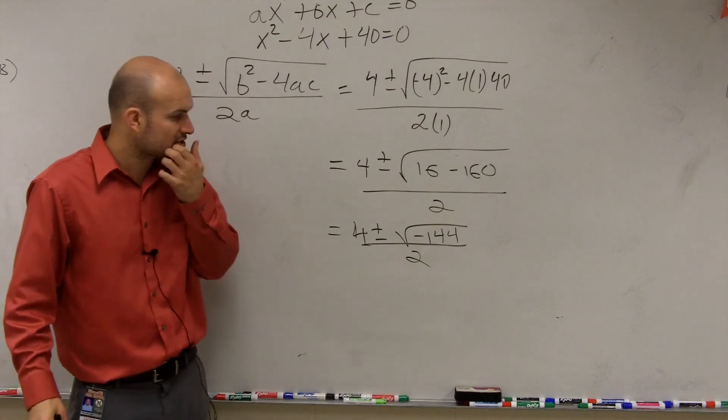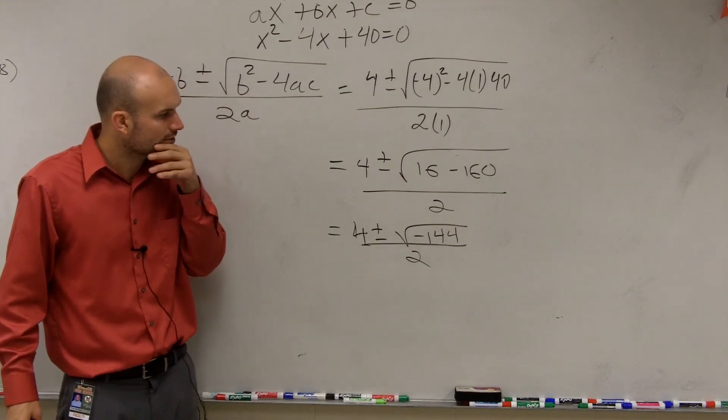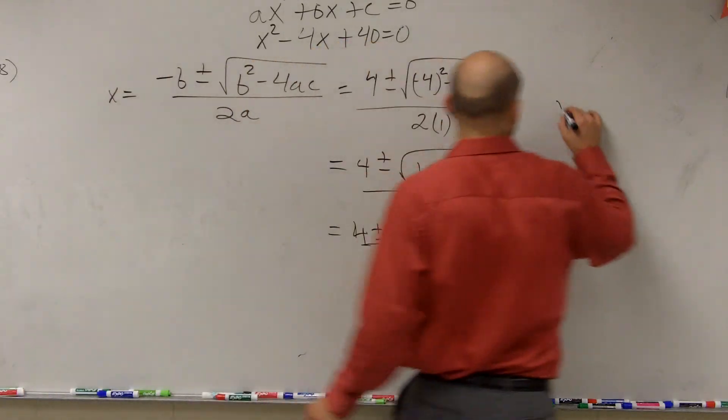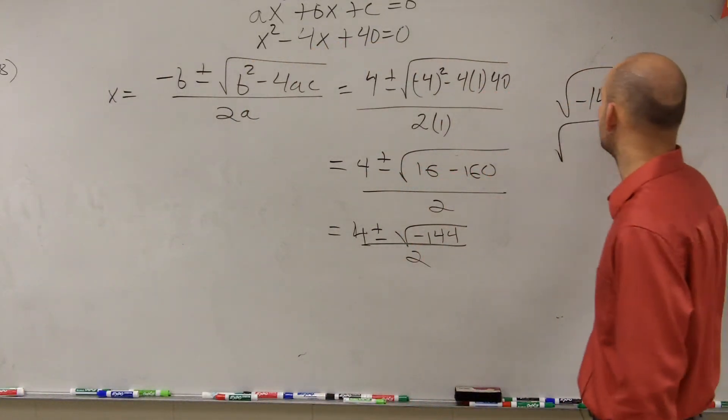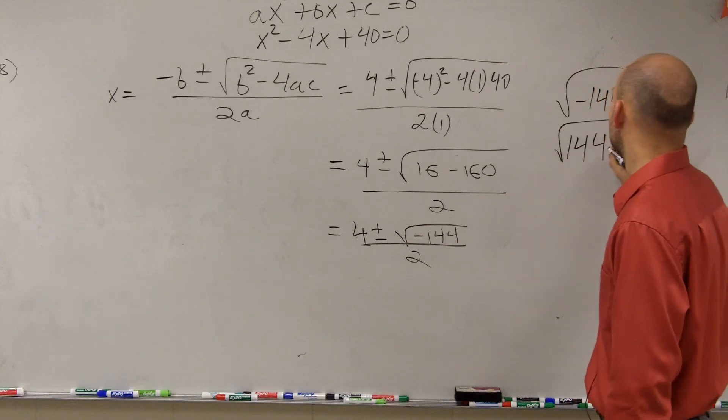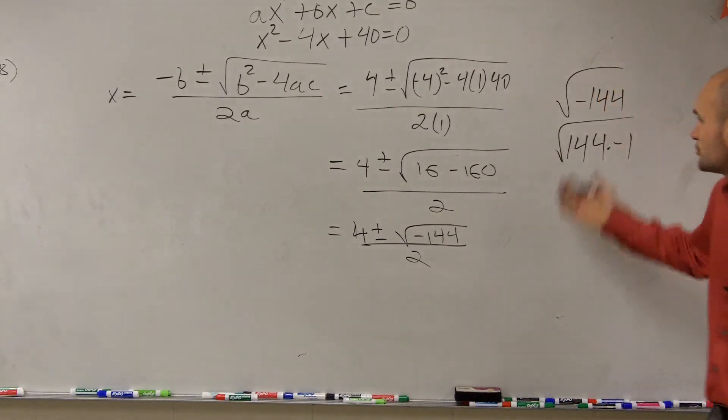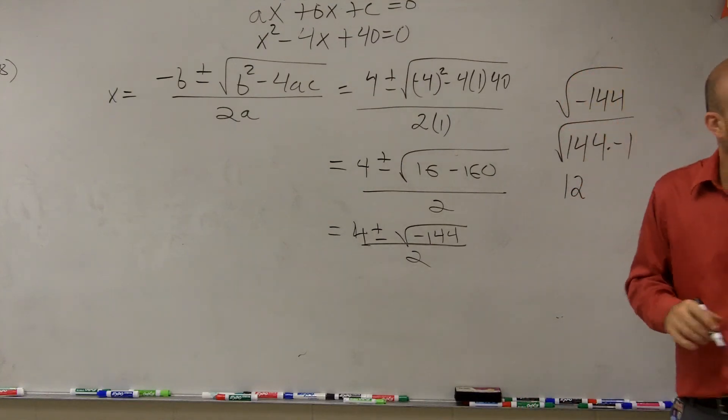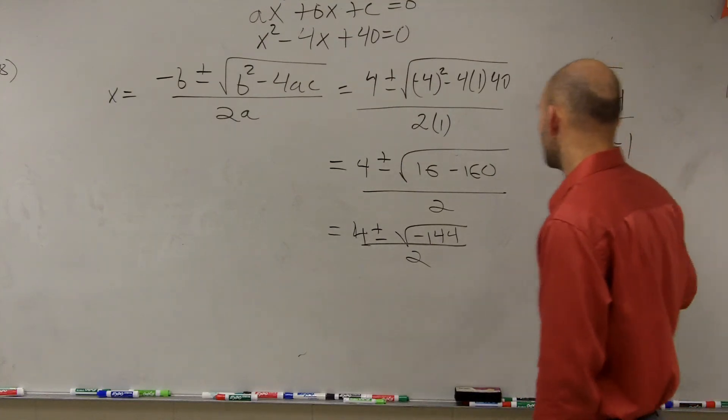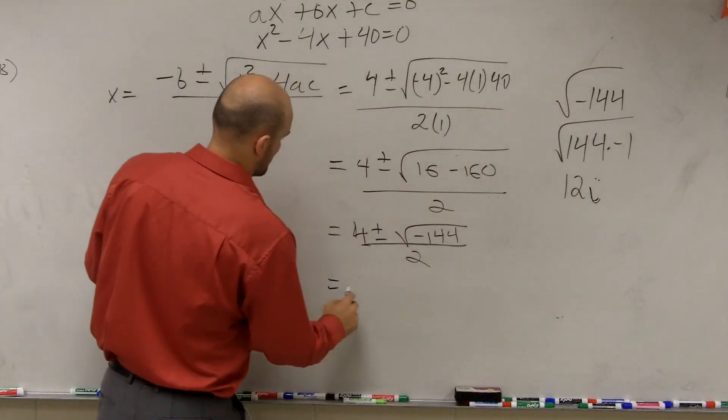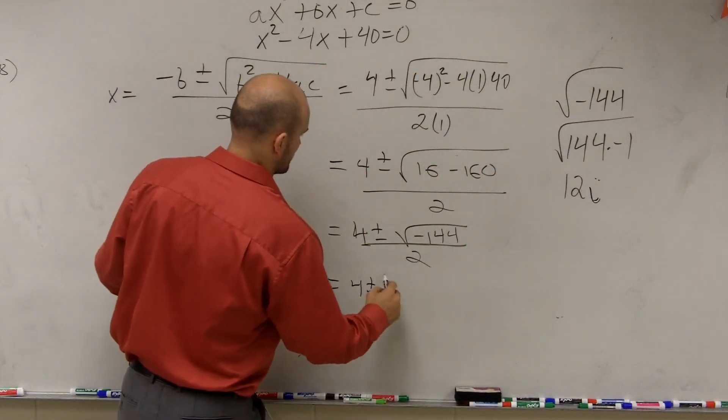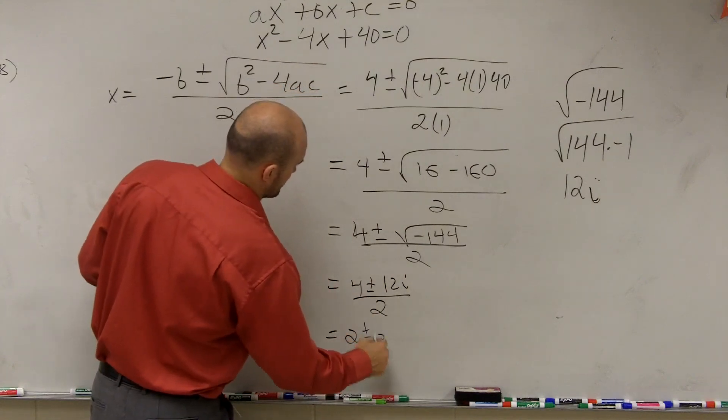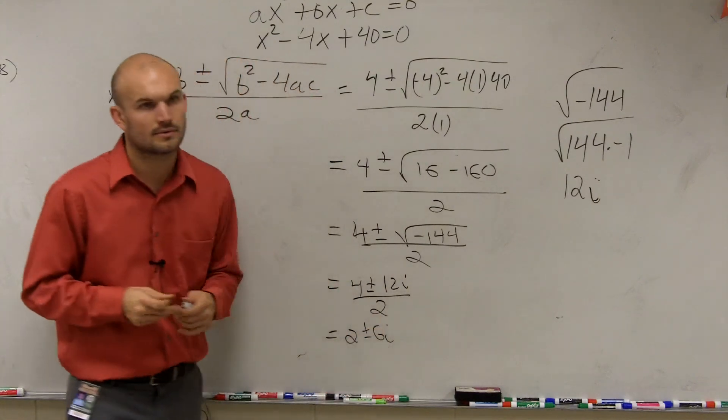So we have 4 plus or minus the square root of negative 144 divided by 2. So what is the square root of negative 144? Well, remember, we write that as 144 times negative 1. The square root of 144 is 12. And the square root of negative 1 is i.